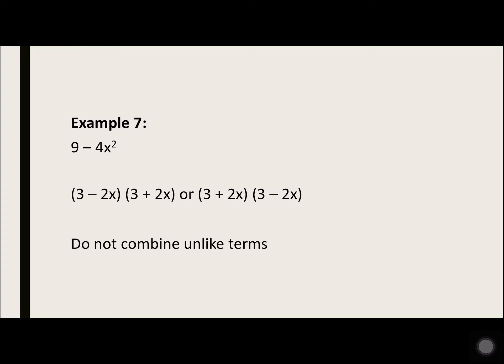Example 7: 9 minus 4x squared. 9 is 3 times 3, and 4x squared is 2x times 2x. So you either have 3 minus 2x times 3 plus 2x, or 3 plus 2x times 3 minus 2x. Either one of those answers is correct. Do not combine unlike terms — don't try to subtract 3 minus 2x or add 3 plus 2x.